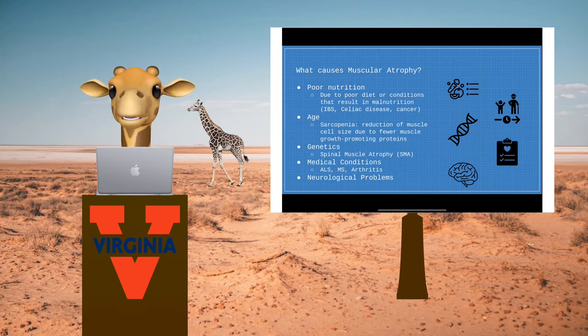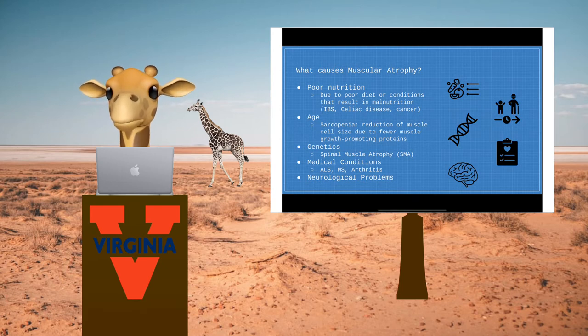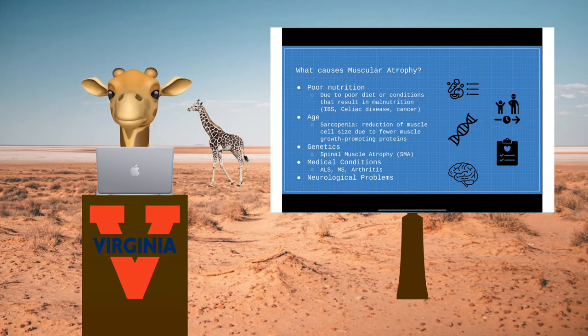Spinal muscle atrophy, the second most common autosomal recessive disorder behind cystic fibrosis, is an example of muscular atrophy that is onset through genetic mutations. Medical conditions and neurological problems affecting nervous stimulation of muscle fibers also inherently result in their subsequent degradation.